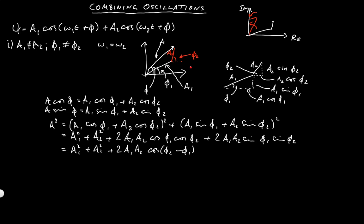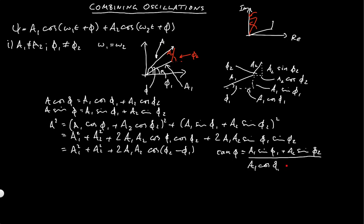We can also calculate that tan phi equals (A1 sin phi1 plus A2 sin phi2) divided by (A1 cos phi1 plus A2 cos phi2). If you don't get the signs right, you can end up with tan being out by a factor of pi — it's very easy using an inverse tan to get the wrong angle — so the phasor diagram helps you visualize which quadrant you're in.